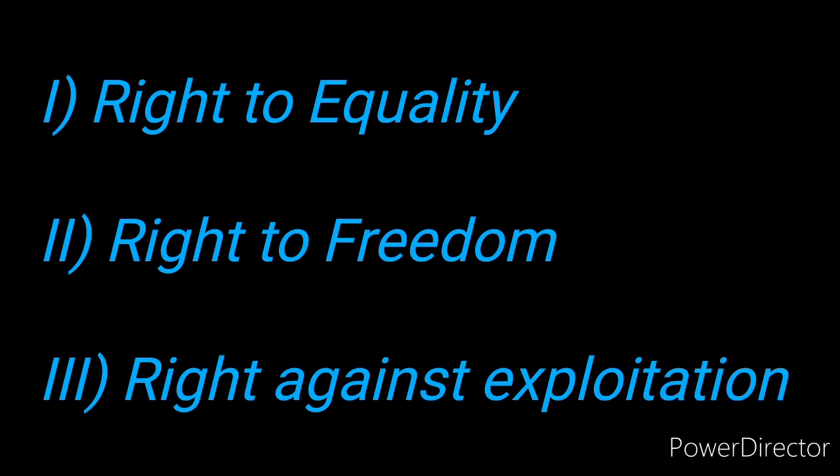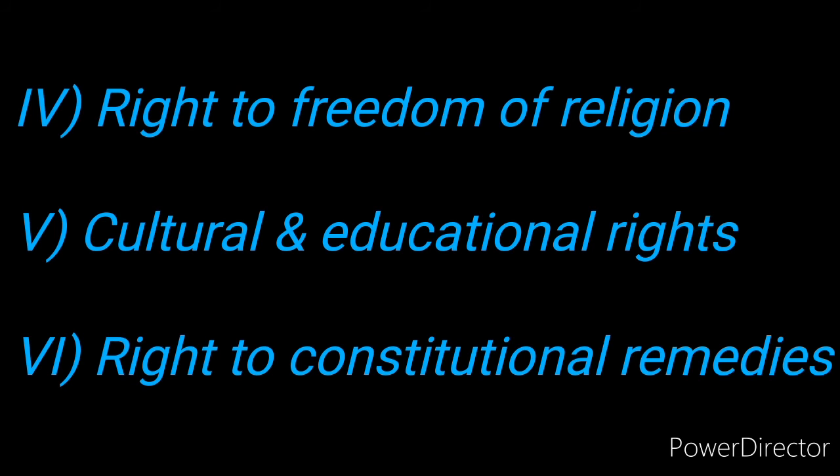The third fundamental right is the right against exploitation. The constitution prohibits human trafficking, forced labor, and employment of children under 14 years of age. The fourth is the right to freedom of religion — religious freedom is provided to all citizens, and every person has the right to practice, profess, and propagate the religion of their choice. The fifth is cultural and educational rights. The constitution states that all minorities, religious or linguistic, can set up their own educational institutions in order to preserve and develop their own culture.